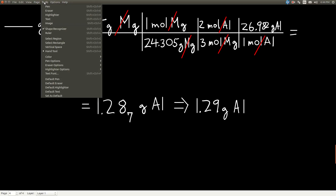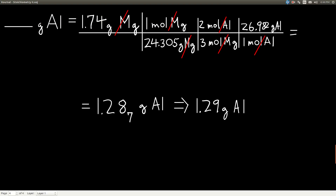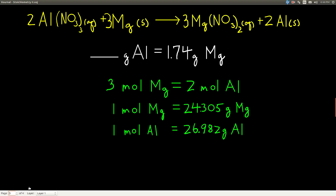We can do this with any relationship in this equation. We could ask how many grams of aluminum nitrate are needed to react with that many grams of magnesium, or how many grams of magnesium nitrate we can make from that many grams of magnesium — anything. It's the same idea: just use the mole-to-mole ratio between the two species you care about in the balanced equation, then the molar mass to convert to moles, and the molar mass of the second species to go from moles back to grams.